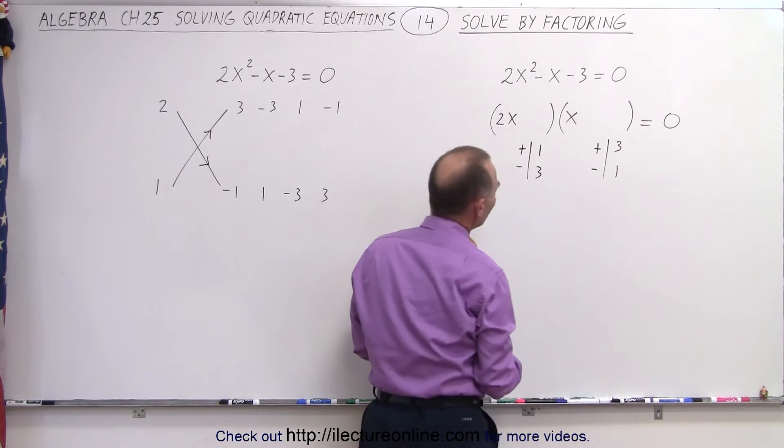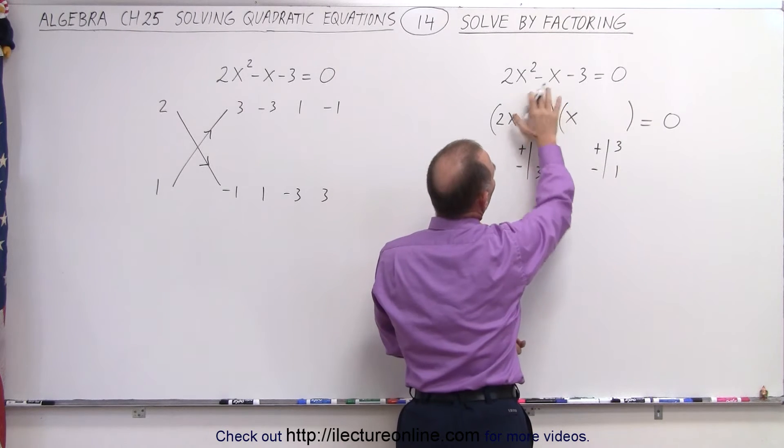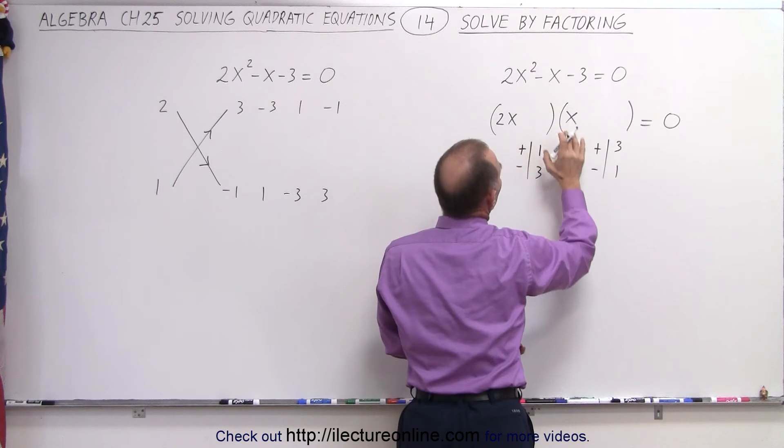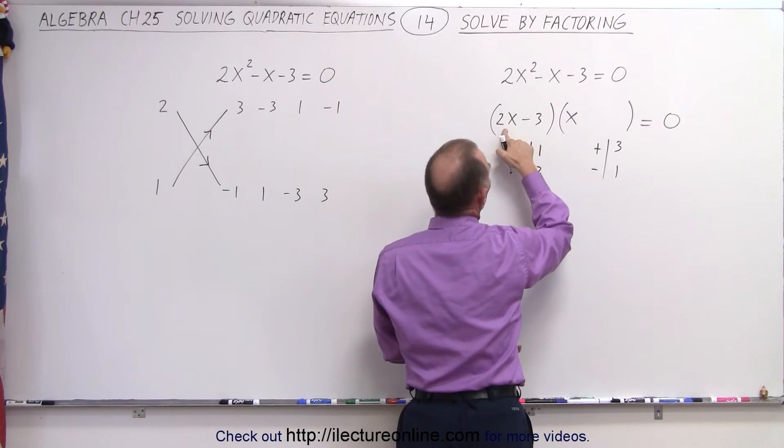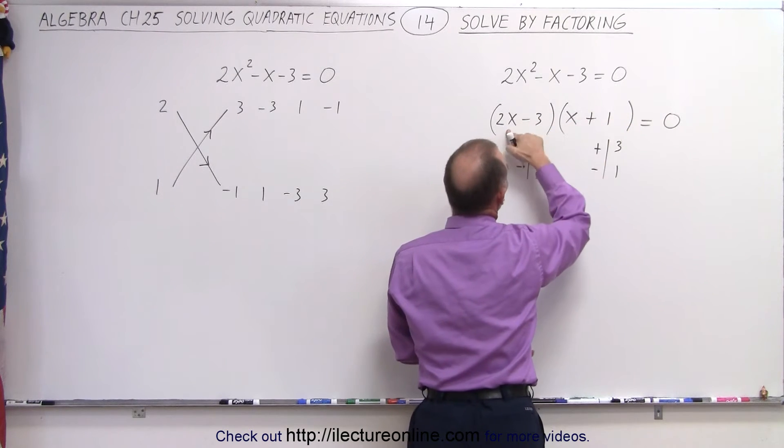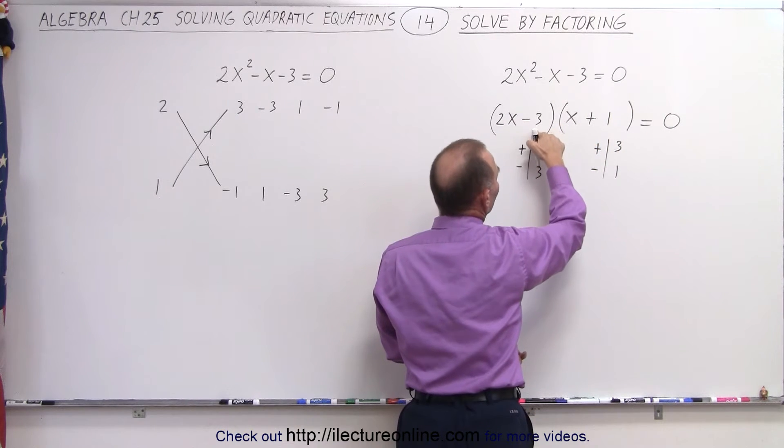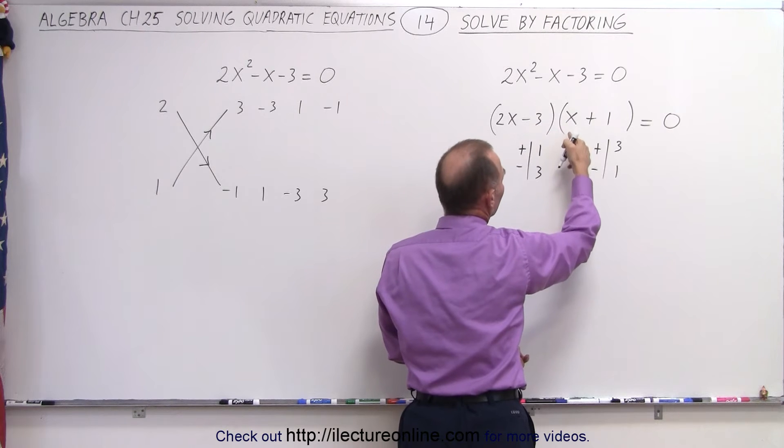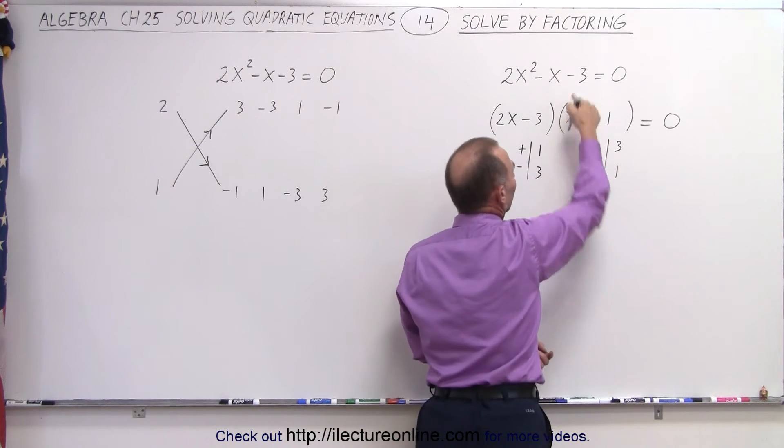So how do we decide? Well, sometimes we do a little trial and error, or sometimes we can kind of see through it. We want a negative 1 in the middle, so an x times a negative 3 and a 2x times a positive 1, so 2 times 1 gives us a positive 2. x times a negative 3 gives us a negative 3. Negative 3 plus positive 2 gives us negative 1, and a negative 3 times a positive 1 gives us a negative 3.